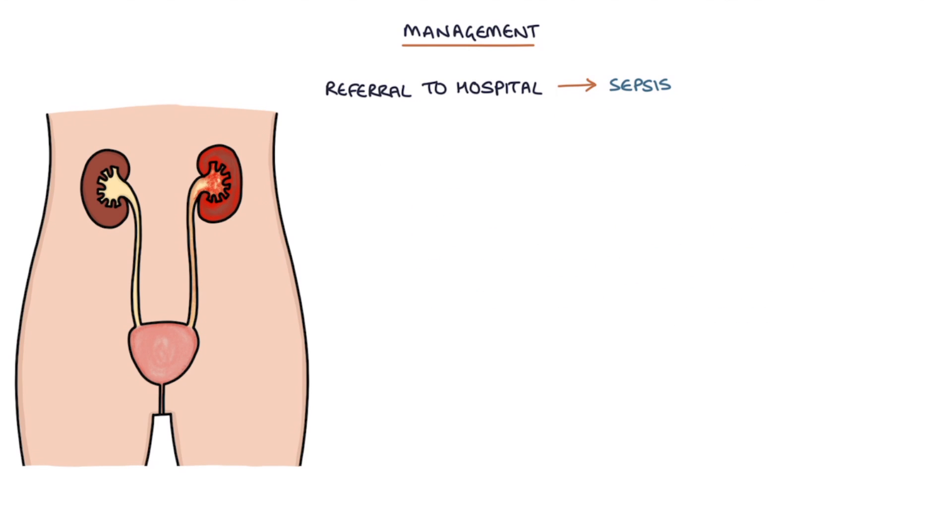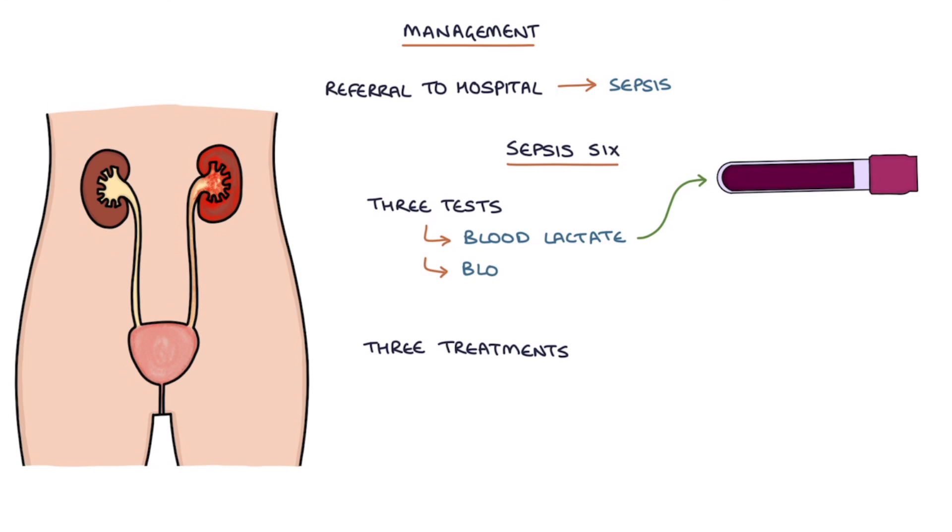Patients admitted to hospital with sepsis require the sepsis 6, which includes 3 tests and 3 treatments. The 3 tests with the septic 6 are the blood lactate level, blood cultures and urine output monitoring.